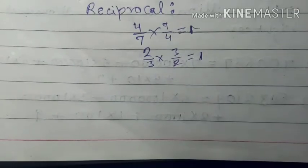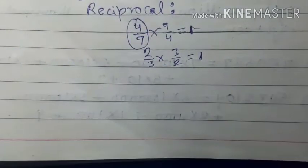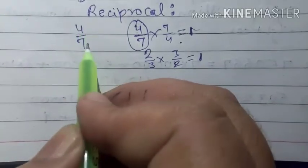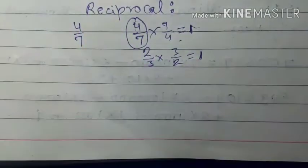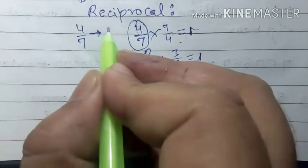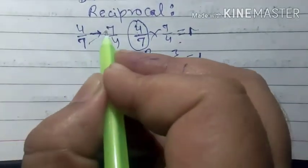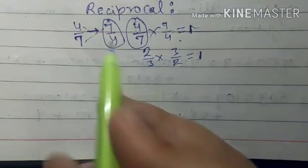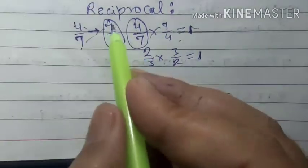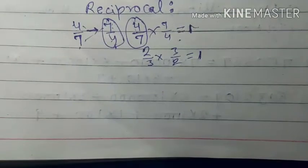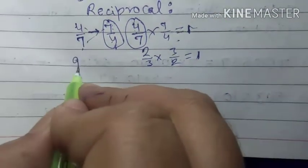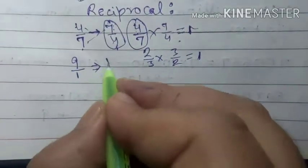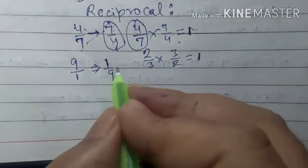In simple language, what is the reciprocal of 4 upon 7? That is 7 upon 4. And what is the reciprocal of 7 upon 4? That is 4 upon 7. What is the reciprocal of 9? Students, we can write 9 as 9 upon 1, so the reciprocal of 9 upon 1 is 1 upon 9. And what is the reciprocal of 1 upon 9? That is 9.